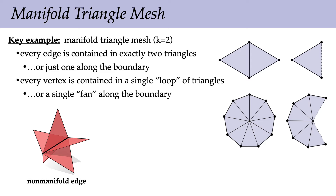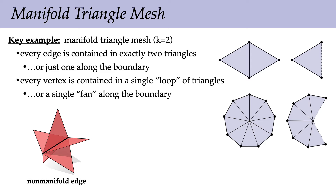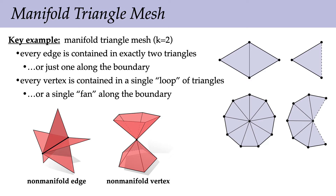What this rules out: a non-manifold edge that is not contained in two triangles but in five triangles. It also rules out a vertex that is not contained in a single loop of triangles but in two distinct loops. If you find this too informal, the earlier definition in terms of the link is the formal one. This is just meant to give quick intuition for what a manifold triangle mesh — a manifold simplicial two-complex — actually looks like.